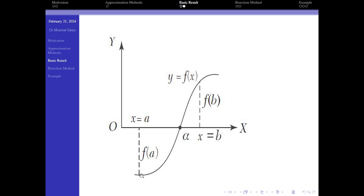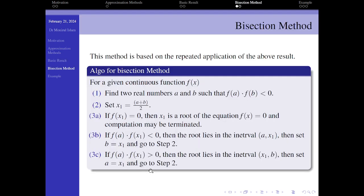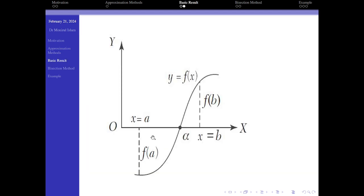Then this graph of the function cuts at least one point of the x-axis. That means we can find at least one root between a and b. Now, by the repeated application of this result, we derive the bisection method.